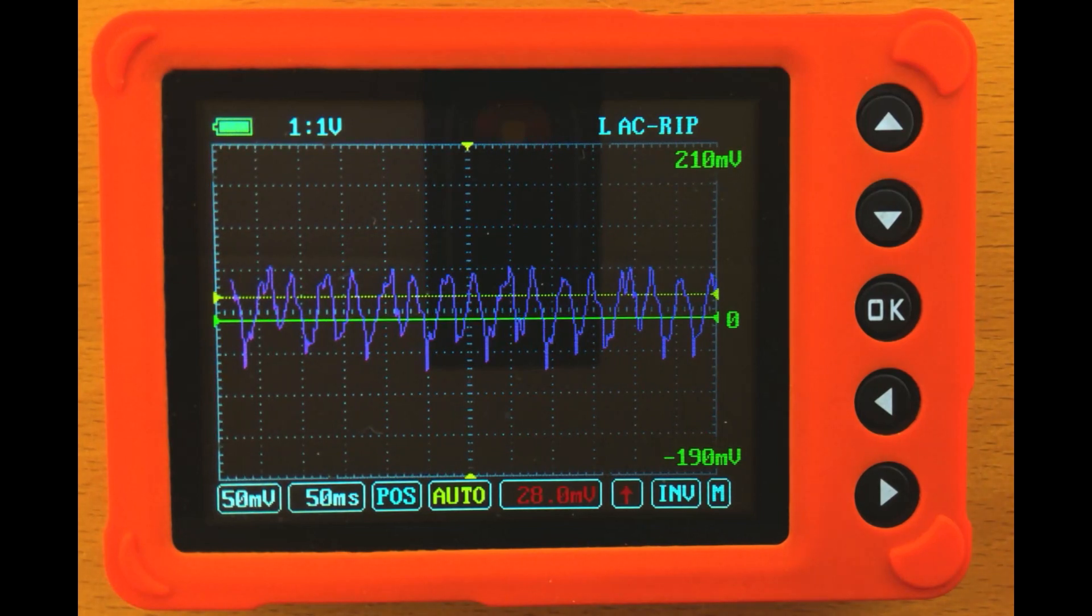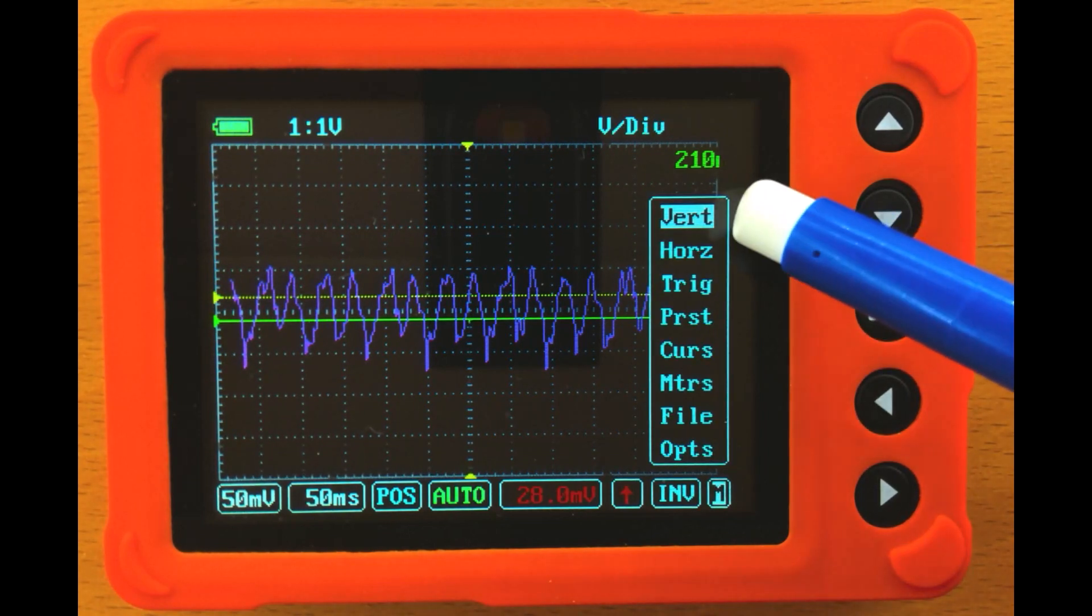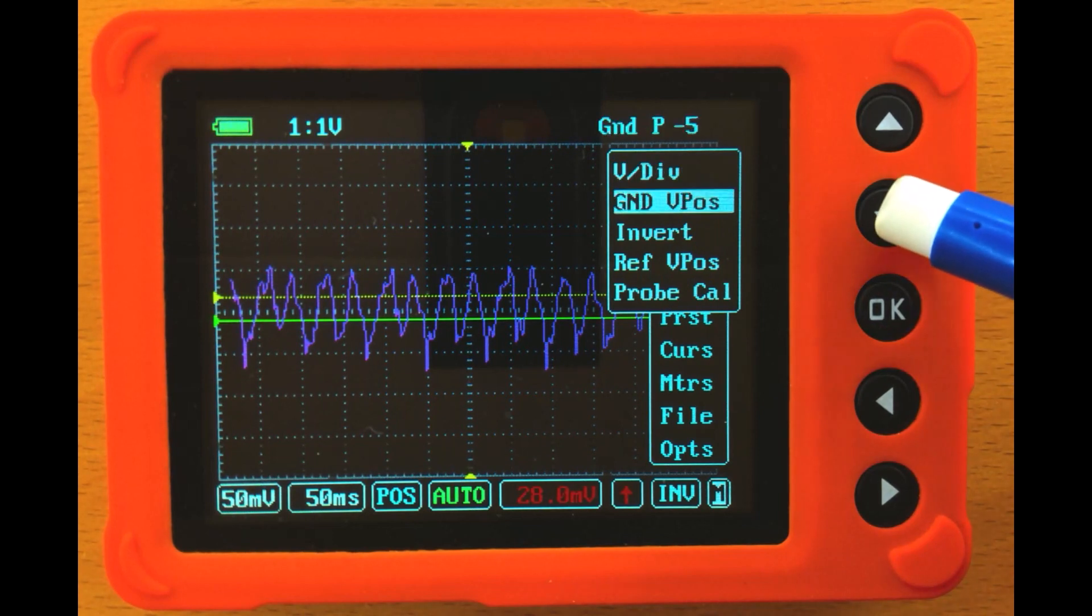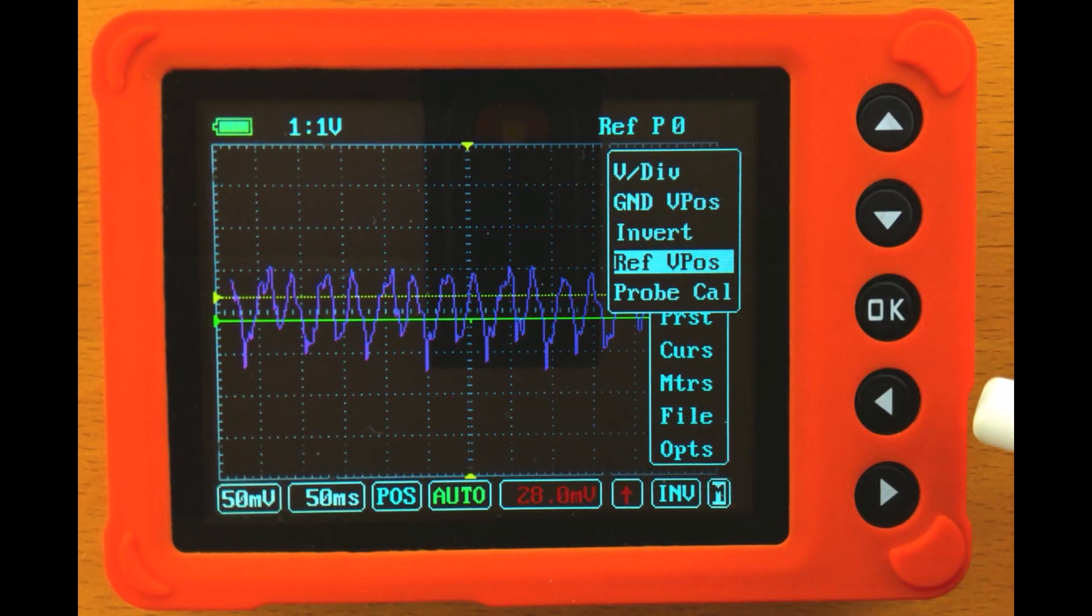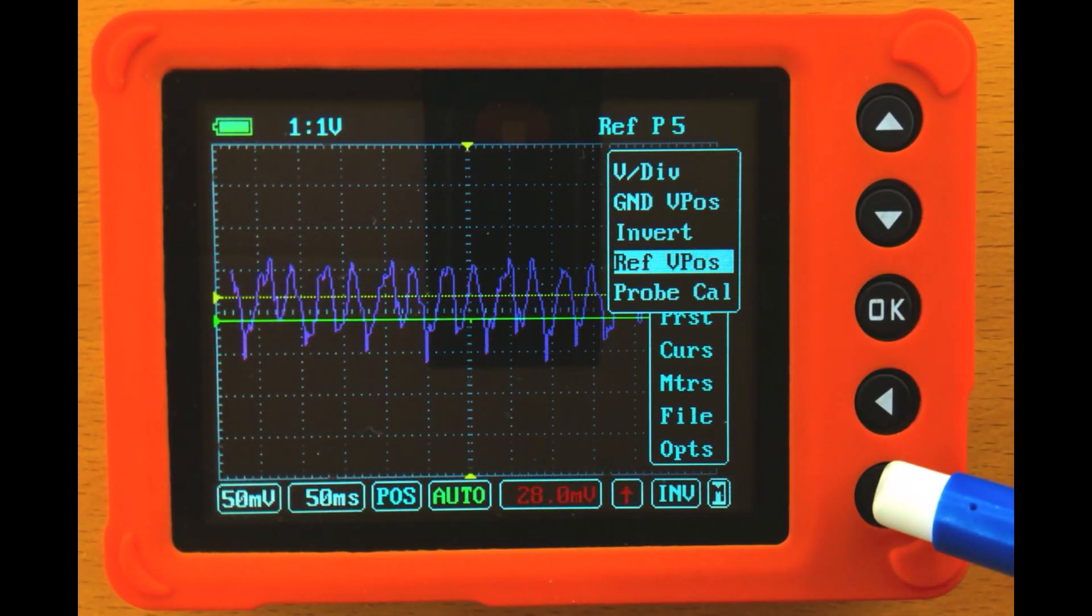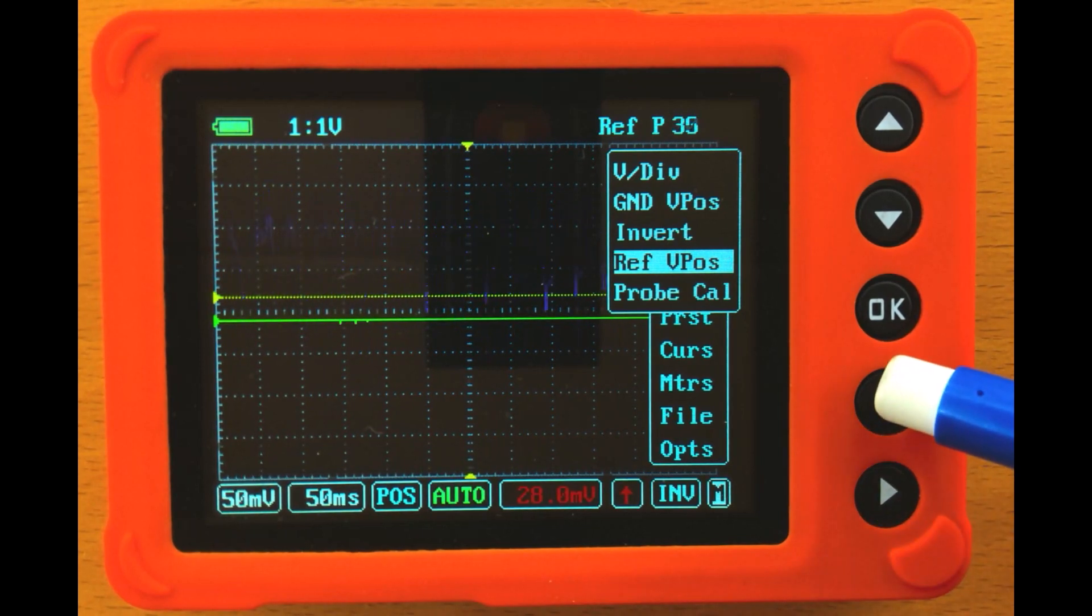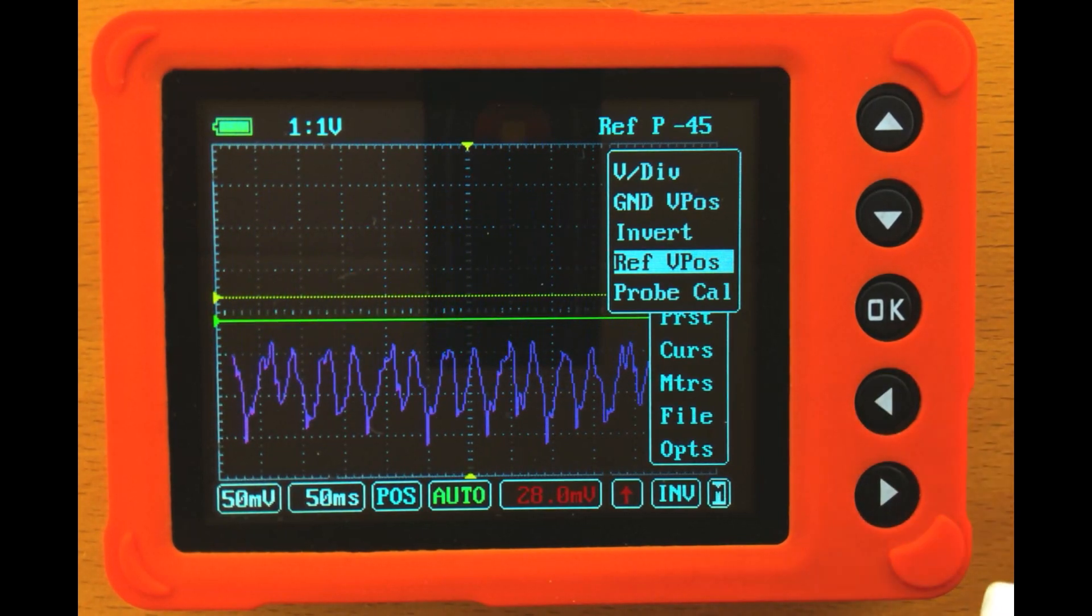Then I can release the OK button. We can now see the reference file, and there's a couple of things that we can do with this reference file. The first thing we can do is if we hit OK, leave it on Vertical, then hit OK again. Then navigate down to Reference V Position, and use the left or right arrow buttons to move the reference file up and down vertically on the screen. So we can see the reference file at the same time we're doing our waveform capture.